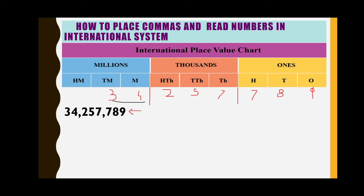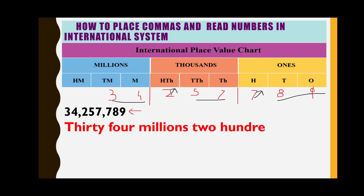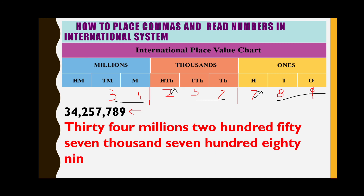Reading from the left: thirty-four comes under millions period — thirty-four million; two hundred fifty-seven comes under thousands period — two hundred fifty-seven thousand; and seven hundred eighty-nine comes under ones period. So the full number is thirty-four million, two hundred fifty-seven thousand, seven hundred eighty-nine.